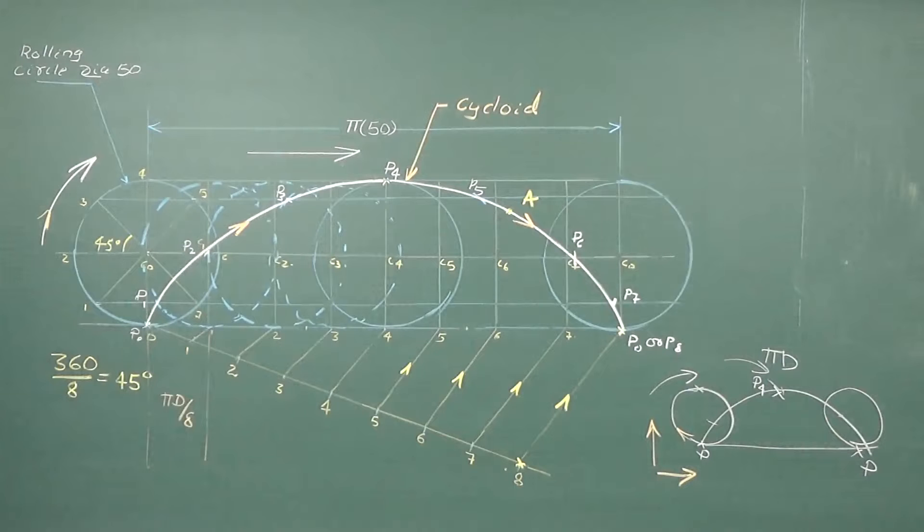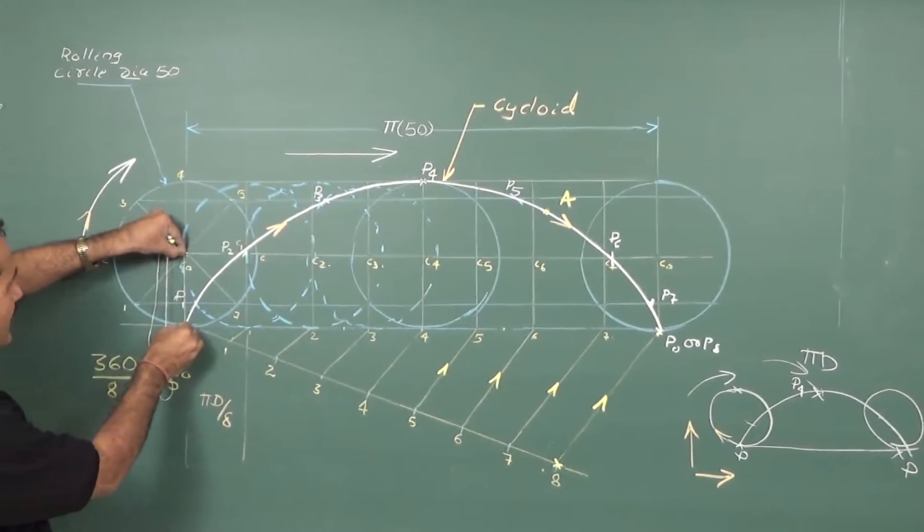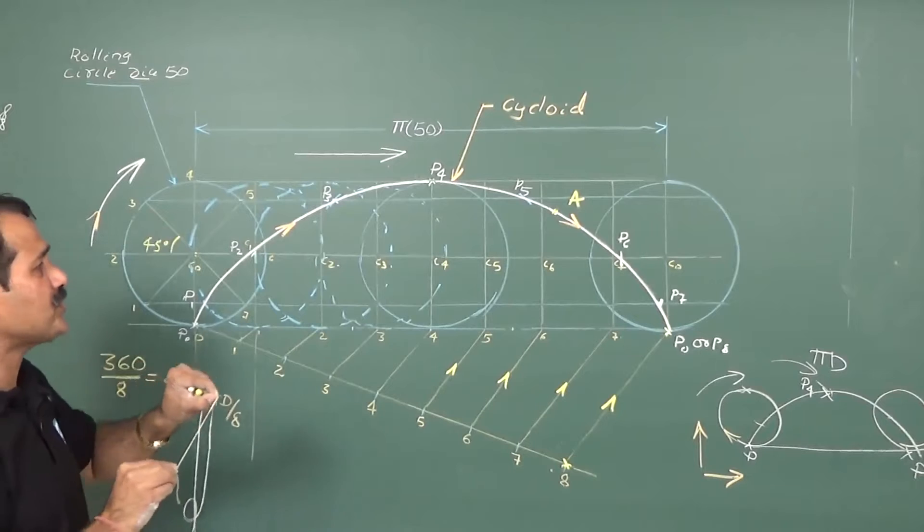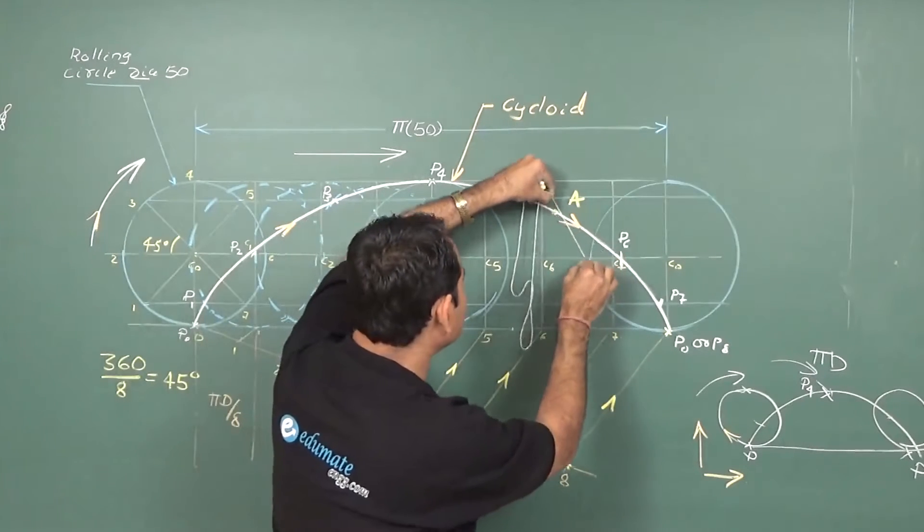For that, first of all, every curve is drawn related to some center. So, what I am doing is I will take radius. And the point where I am supposed to draw tangent and normal, just I will cut on the center line.